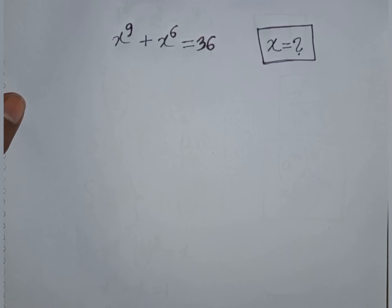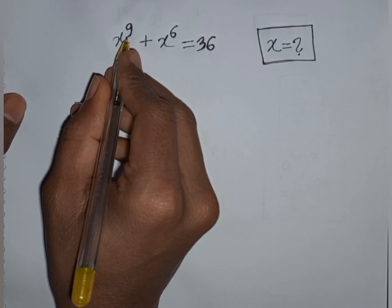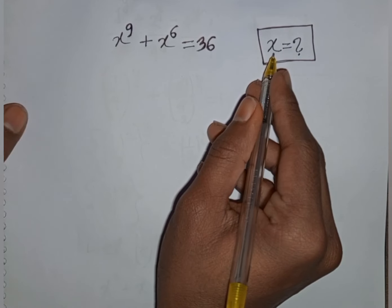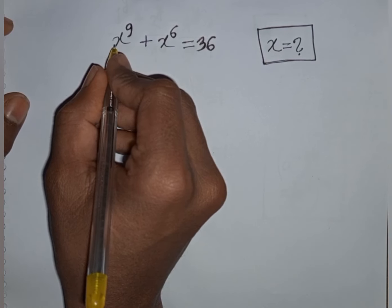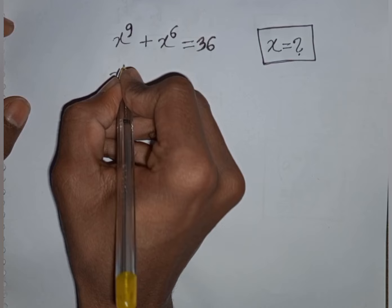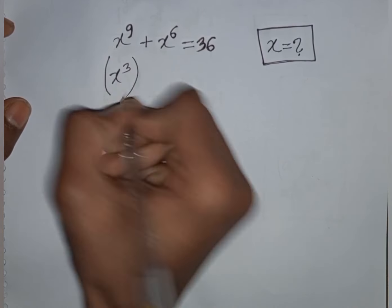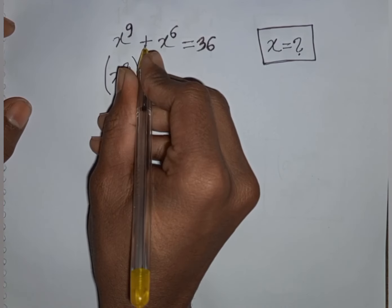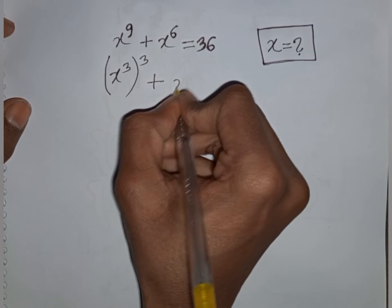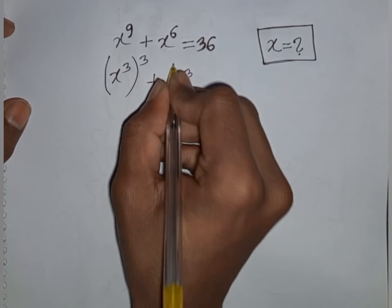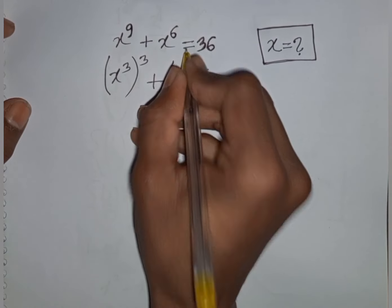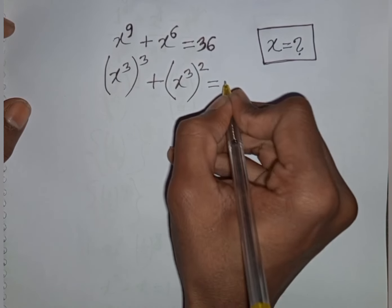Now the second problem: solve x^9 + x^6 = 36, find the value of x. We rewrite: x^9 = (x^3)^3 and x^6 = (x^3)^2, so (x^3)^3 + (x^3)^2 = 36.